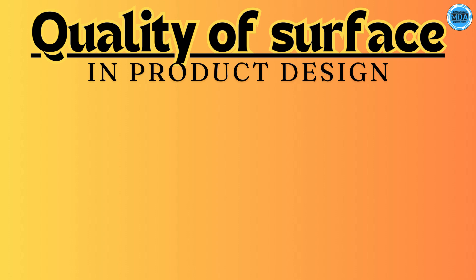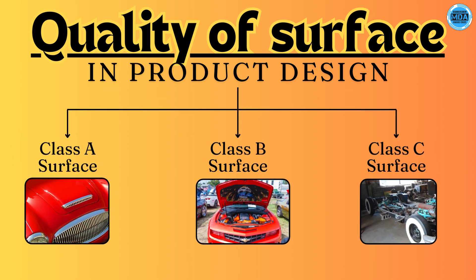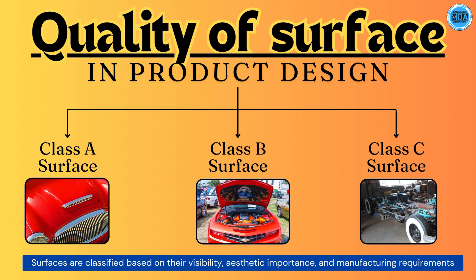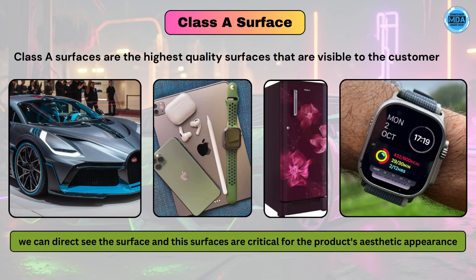The aesthetic look of the product depends on the quality of the surfaces in the product design. The quality of surfaces in product design are categorized into three different parts: Class A surface, Class B surface, and Class C surface. This classification of surfaces is generally based on visibility, aesthetic importance, and manufacturing requirements.